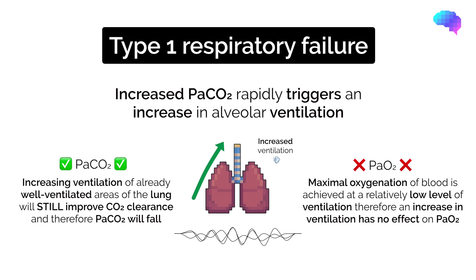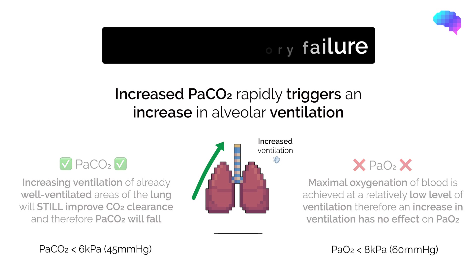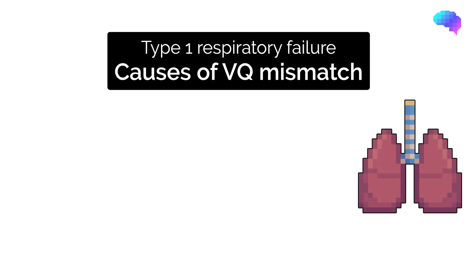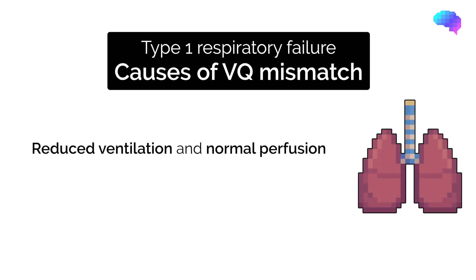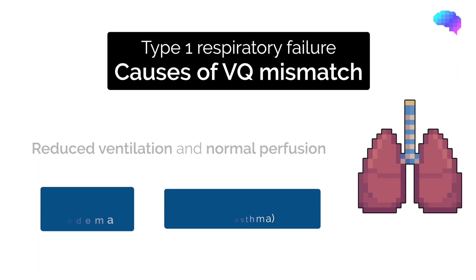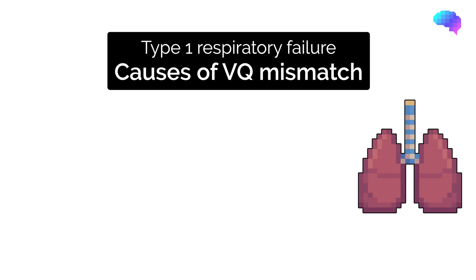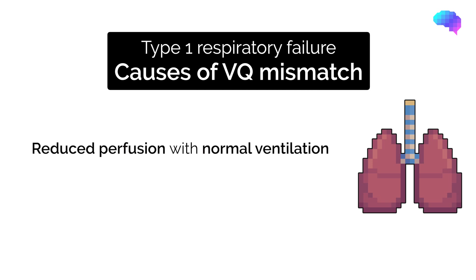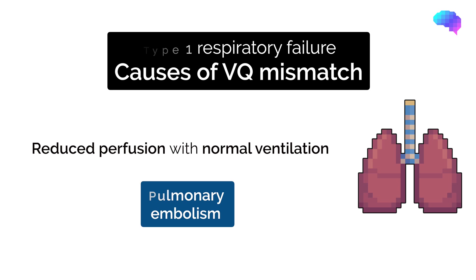The end result is hypoxemia with normacapnea. Examples of VQ mismatch include reduced ventilation with normal perfusion — for example, pulmonary edema or bronchoconstriction — and reduced perfusion with normal ventilation, such as a pulmonary embolism.